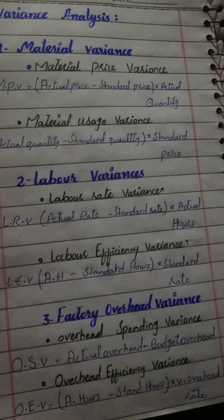Variance analysis — mean actual minus standard or budgeted — can depend upon four major kinds of variances, which can be divided into further sub-kinds. The first major variance is material variance, which has two sub-kinds: material price variance and material usage variance.